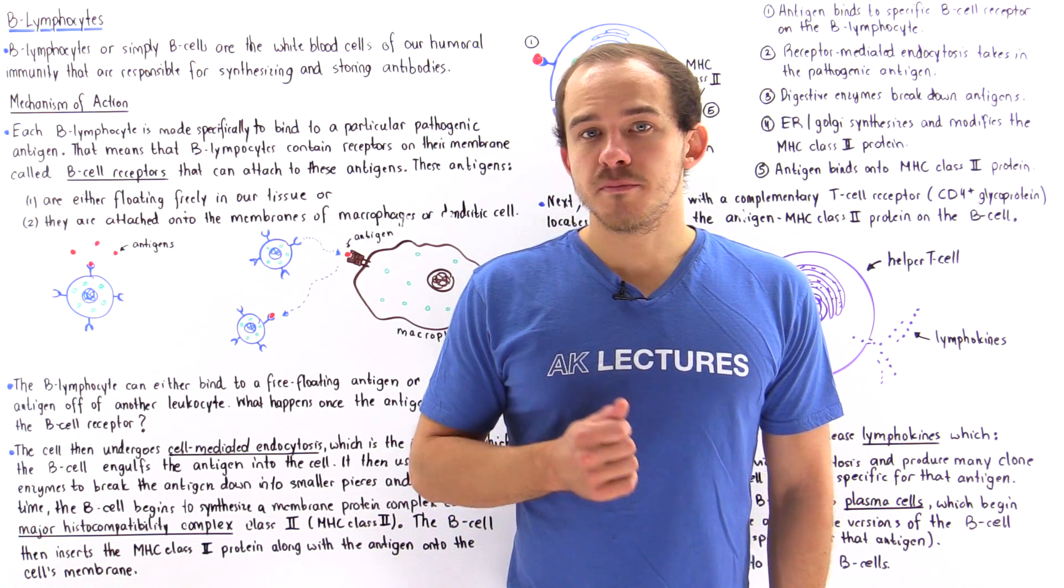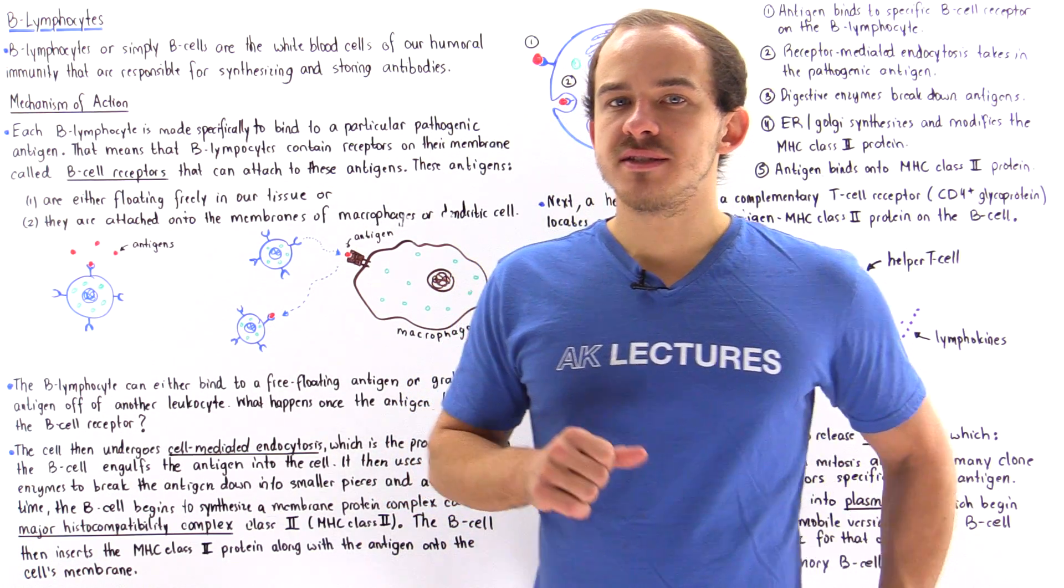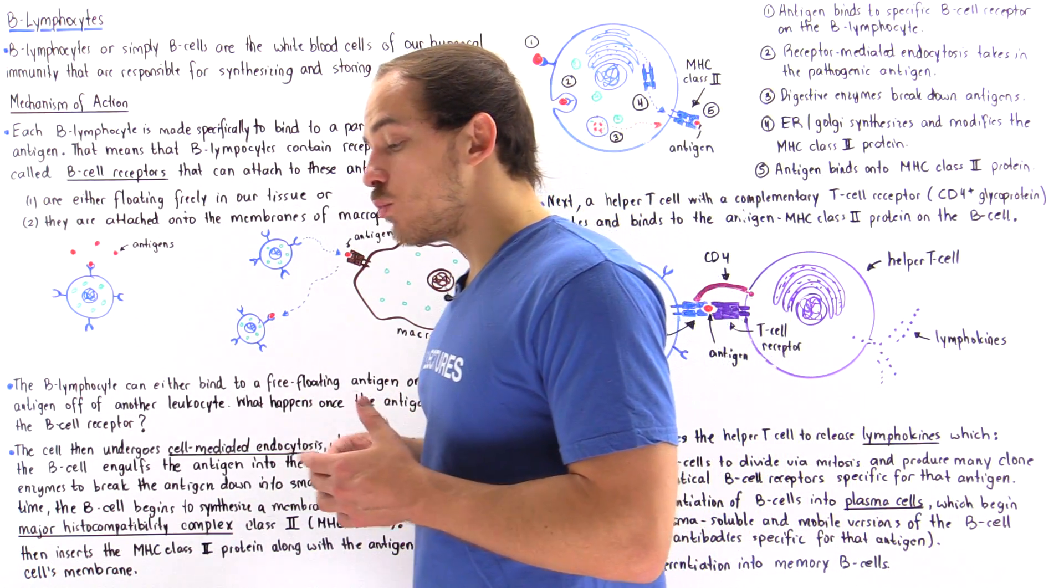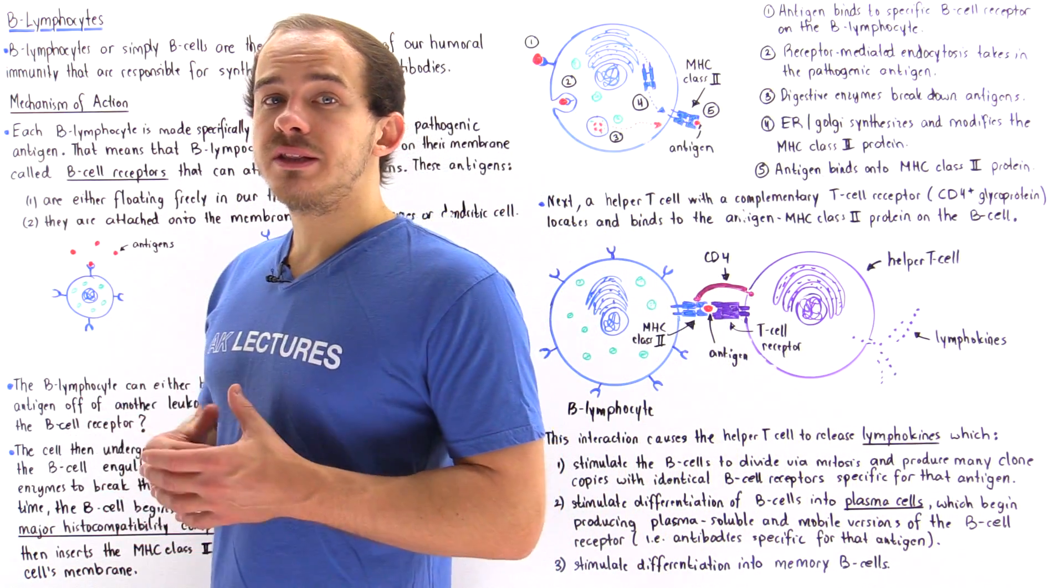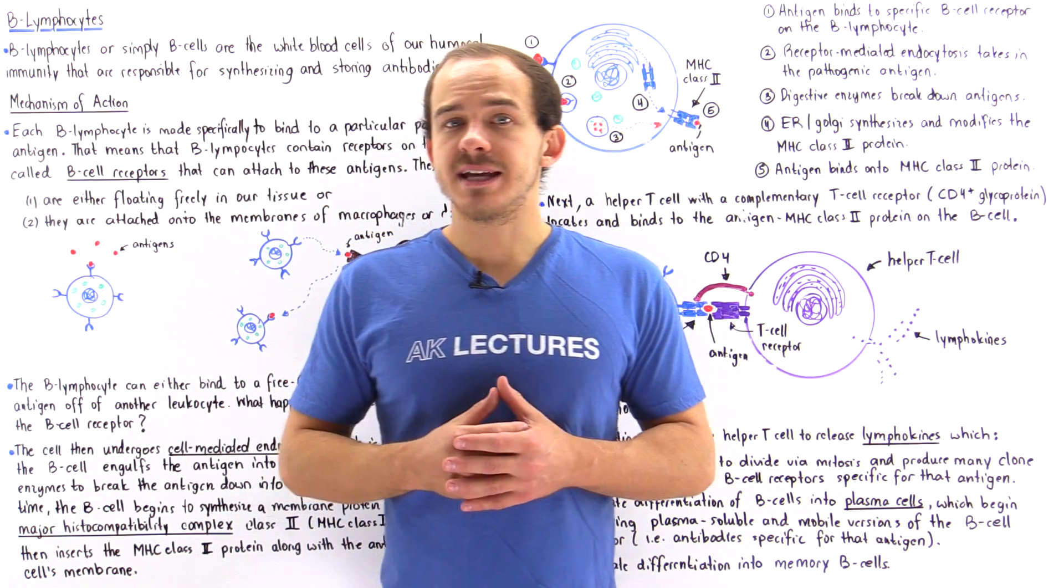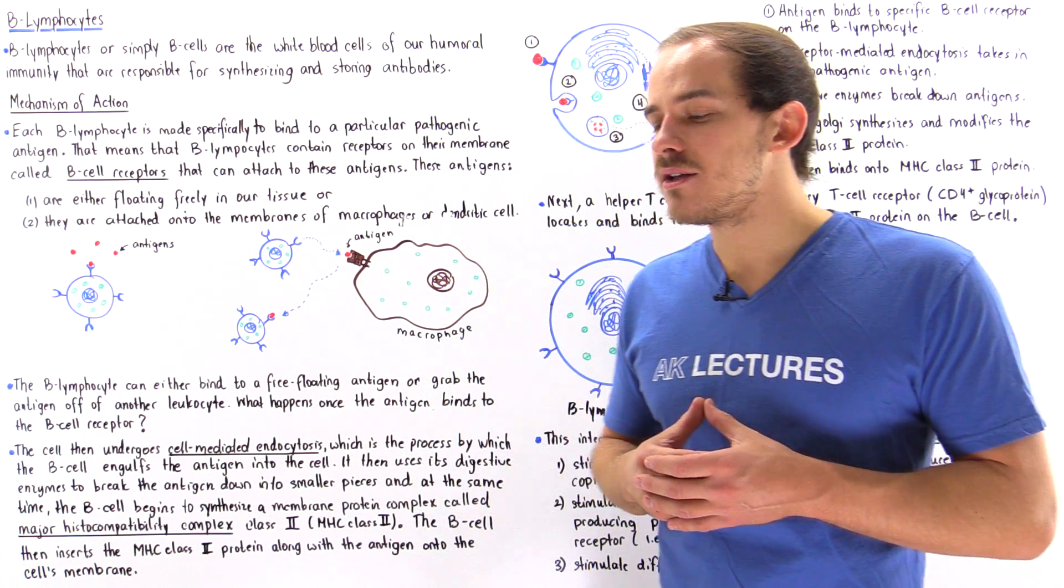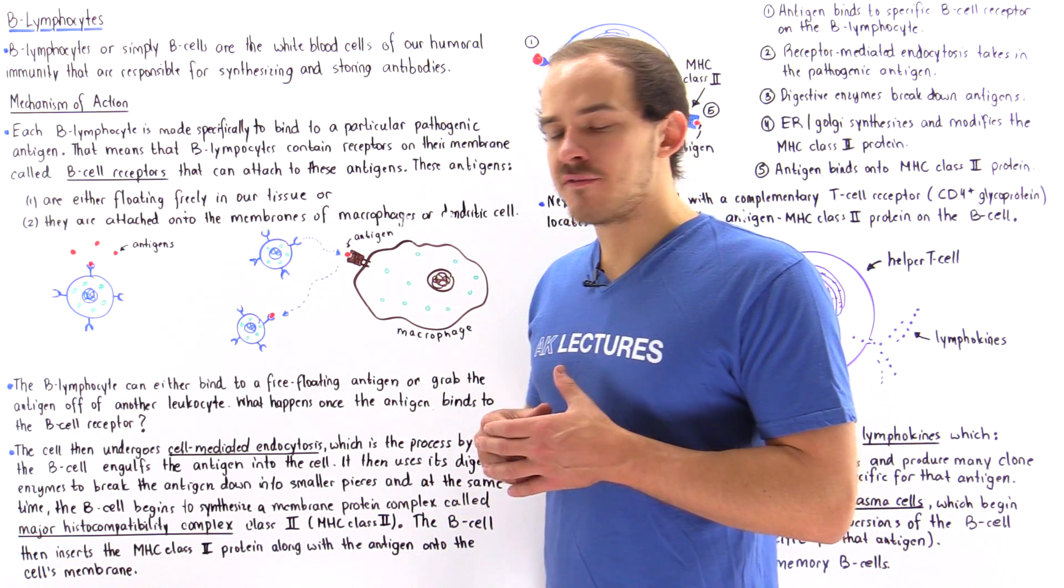B lymphocytes, or simply B cells, are the white blood cells that make up the humoral immunity of our immune system. This means B lymphocytes produce antibodies and store them in specialized cells in case reinfection ever takes place.